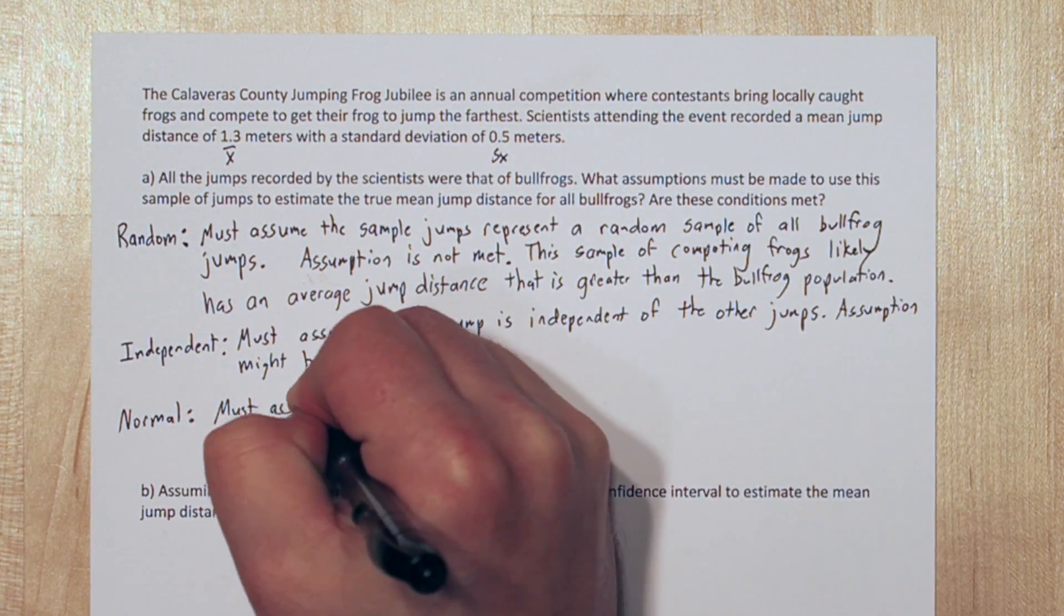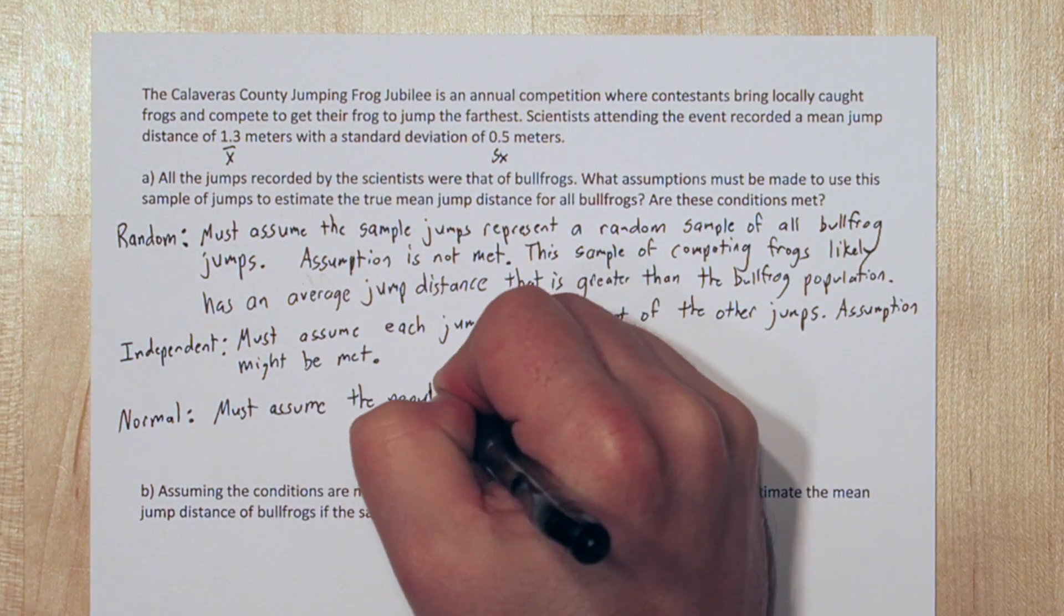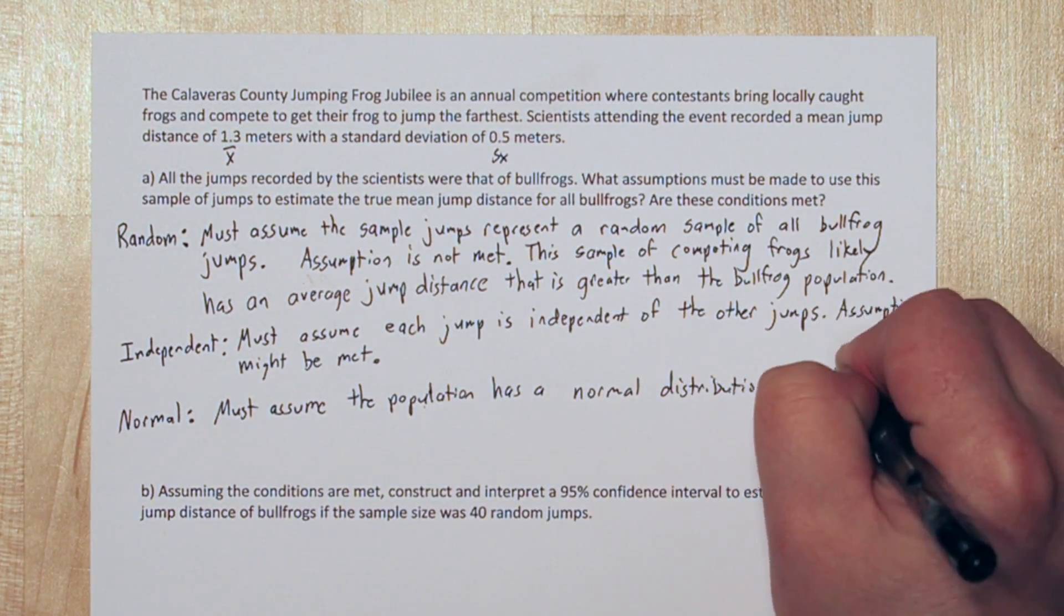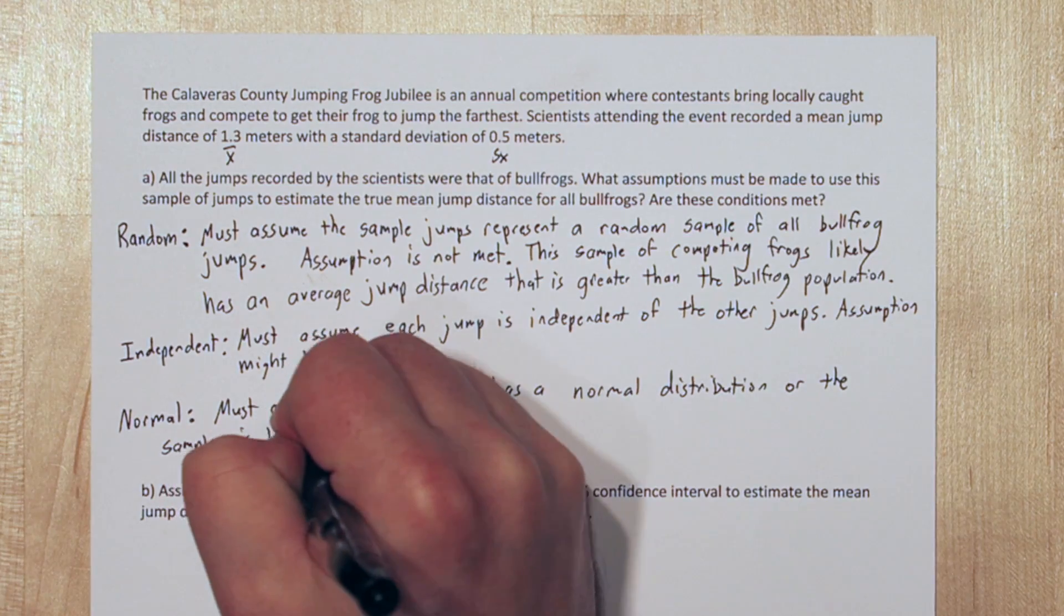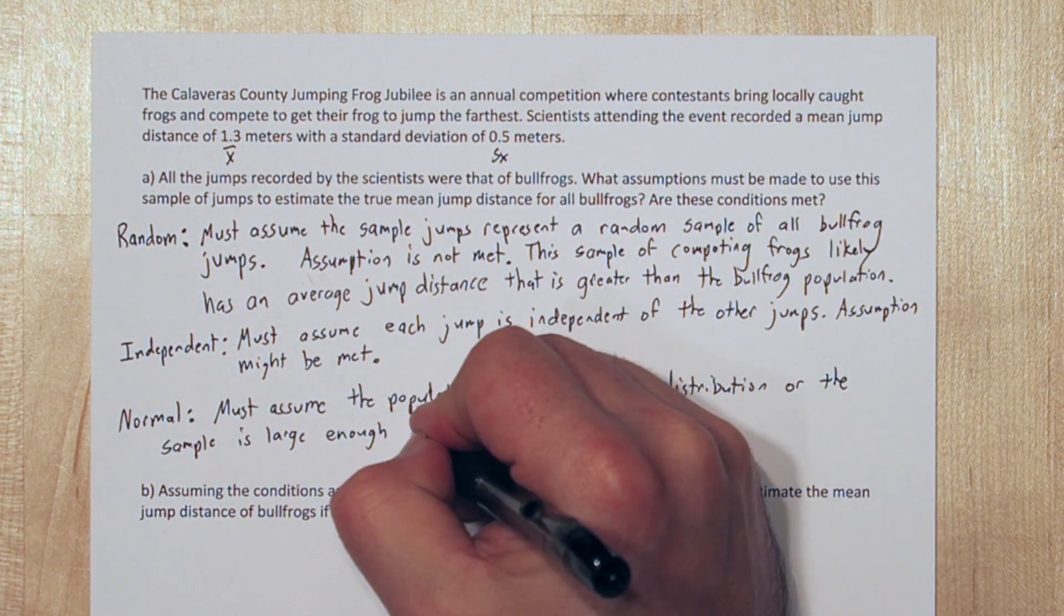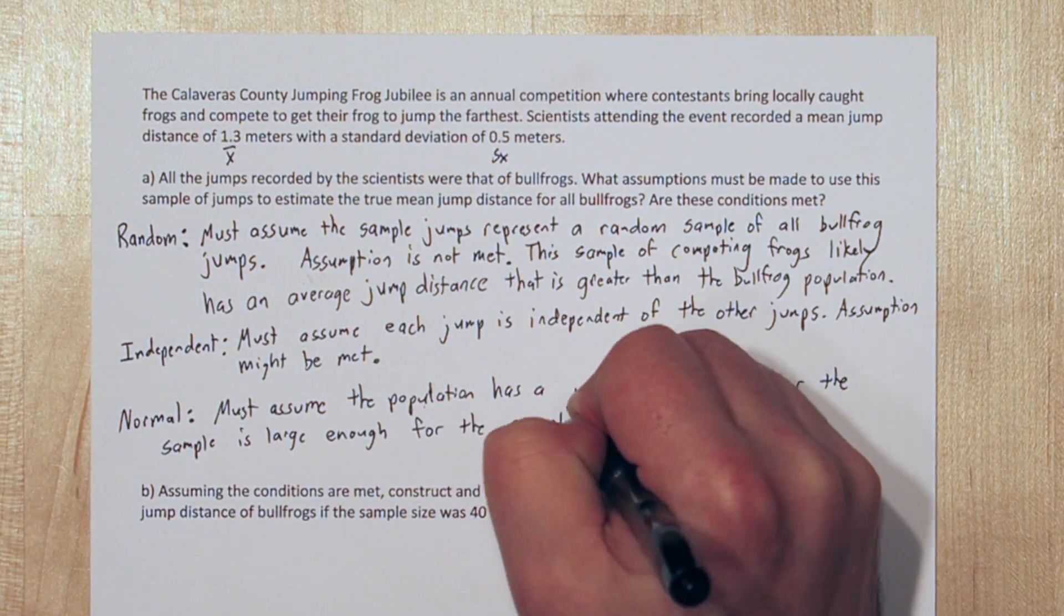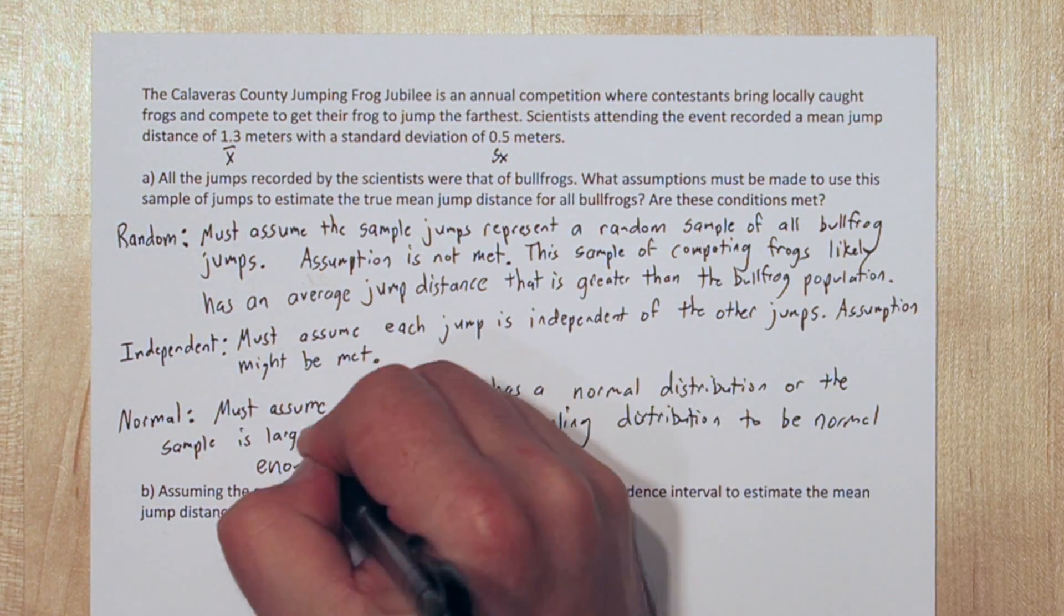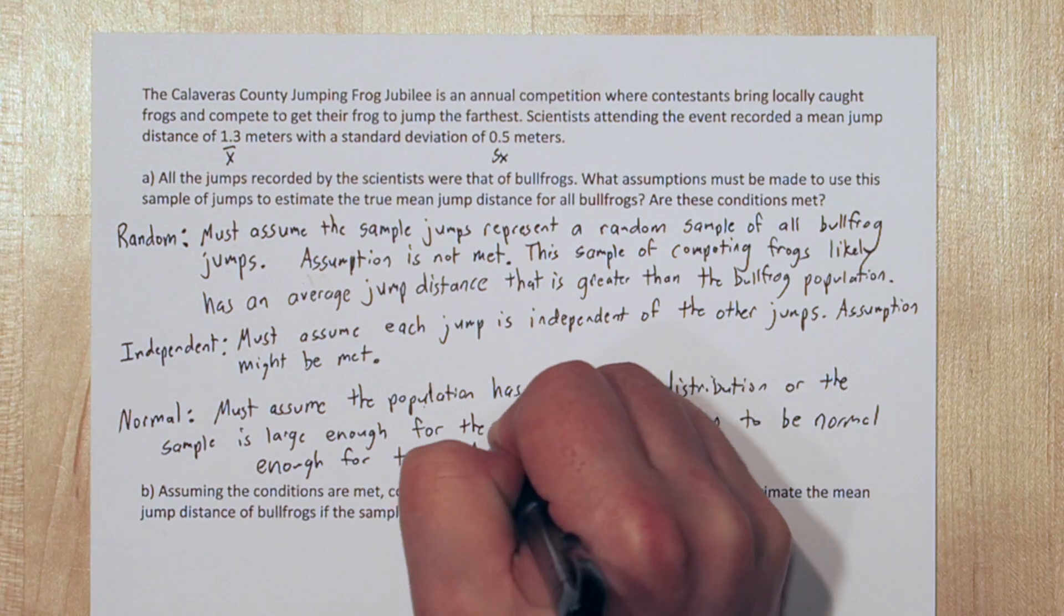The last assumption is the normal condition. We must assume the population has a normal distribution or the sample is large enough for the sampling distribution to be normal enough for T procedures. That could be a pretty small sample because T is a fairly robust procedure, but it's still something we need to check.